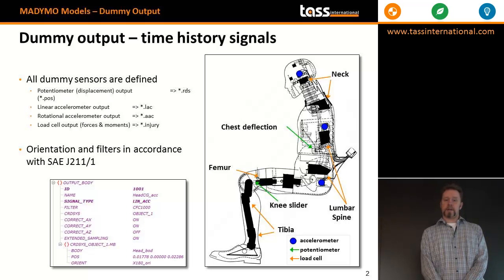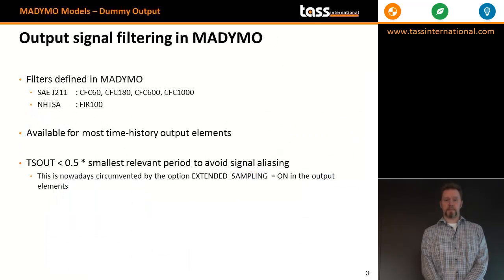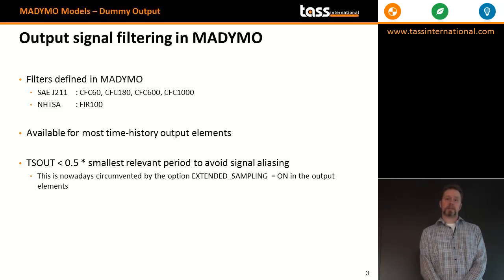All orientations and filters are defined in line with the hardware and in accordance with SAE J211-1. Output signals can be filtered automatically within Madimo. The software offers SAE J211 CFC filters and the FER100 filter from NHTSA.